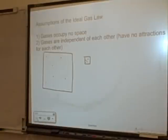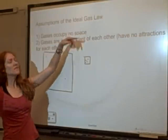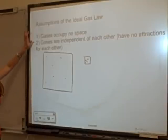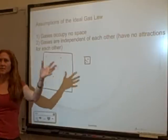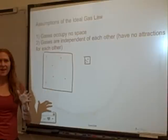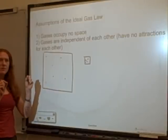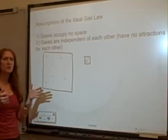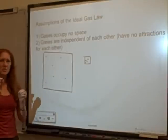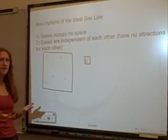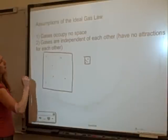Today we're going to look at the ideal gas law versus the van der Waals equation. The ideal gas law assumes some ideal conditions — there are two assumptions. The first assumption is that gases themselves occupy no space, meaning the particle itself has negligible volume. So we think of gas as tiny particles whose volume is so small it doesn't matter, with empty space in between.